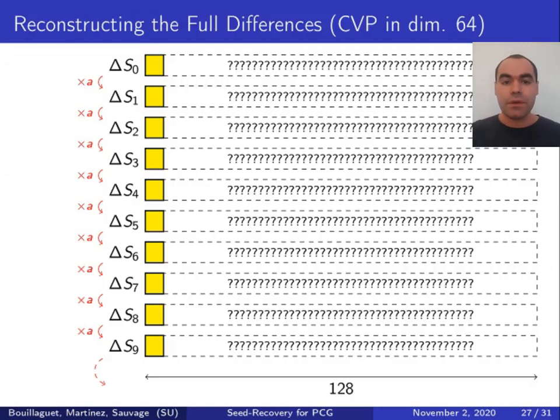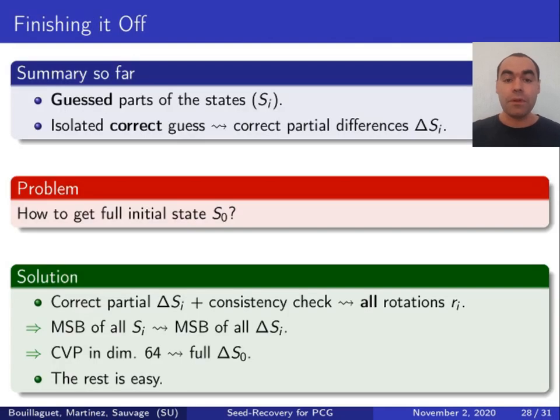The full differences on 128 bits form a geometric progression. We know the most significant bits. So using, again, the same technique as before, this time in slightly larger dimension, we can reconstruct all the missing bits. And this gets us the complete full differences on 128 bits. And obtaining the actual values of the first state from there is relatively easy.